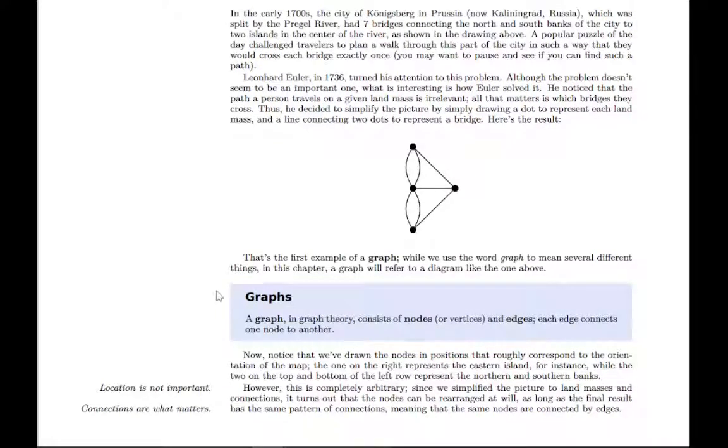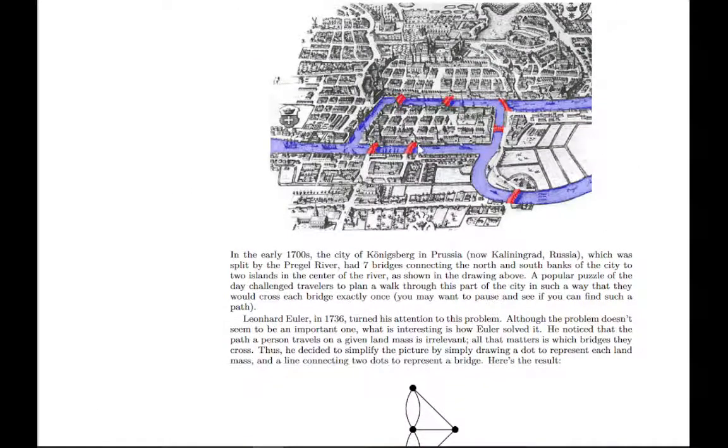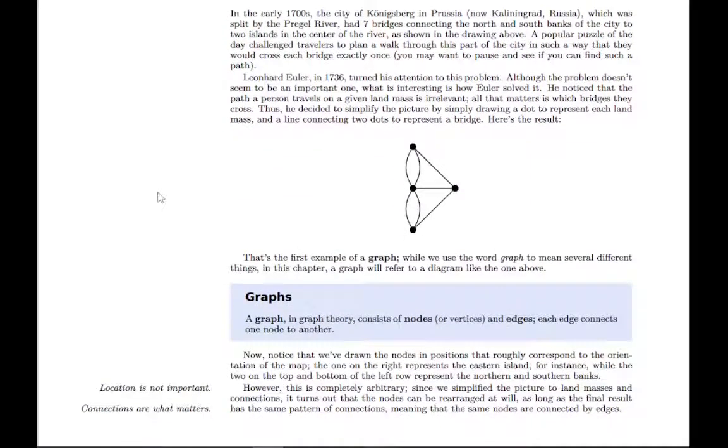A little bit of terminology: a graph consists of nodes or vertices. Each one of these could be called a node or a vertex, depending on who you talk to. We have edges that connect one node to another. Each edge is a connection between two nodes. We'll also see examples where you have an edge that connects a node to itself, a little loop. In other applications, it would make sense to have a connection with itself.